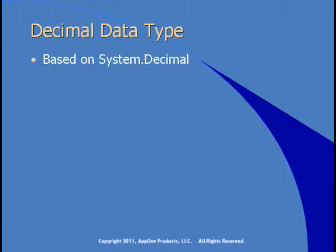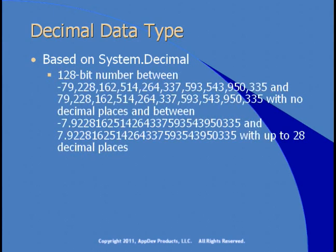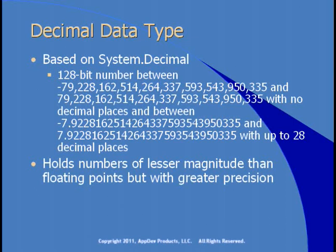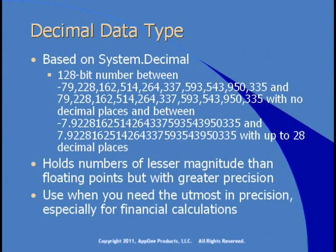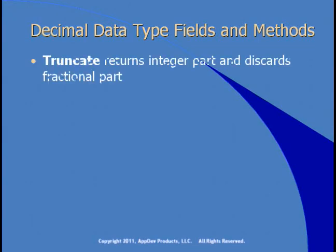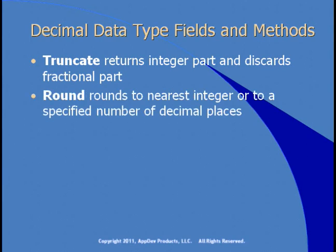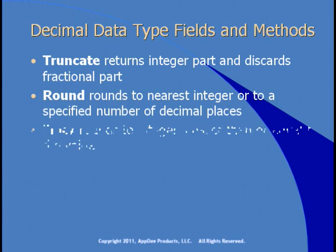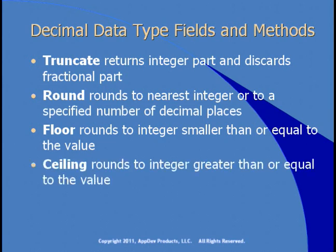The Decimal data type is based on System.Decimal and holds a 128-bit number. It holds smaller numbers than Single or Double, but with greater precision. Use Decimal when working with money or financial calculations where you want the utmost precision. The Decimal data type has some additional methods: Truncate returns the integer part and discards fractions; Round rounds to the nearest integer or a specified number of decimal places; Floor rounds to an integer smaller than or equal to the current value; and Ceiling rounds to an integer greater than or equal to the current value.